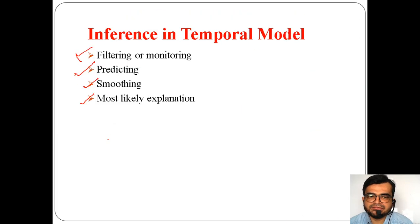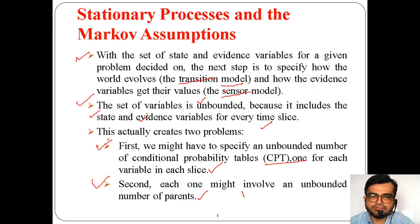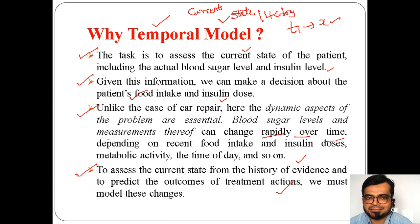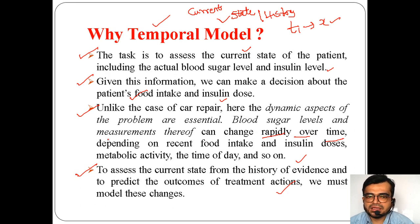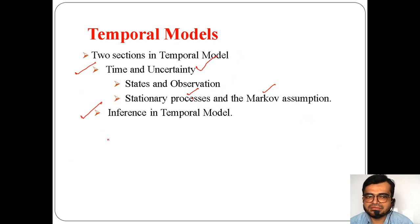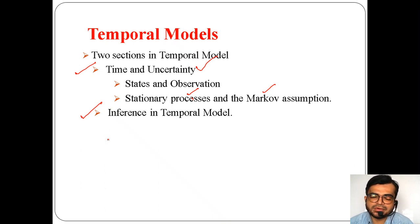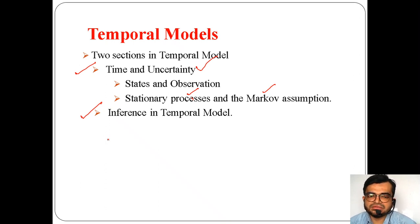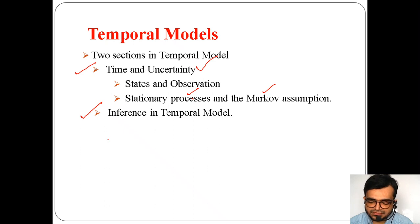In summary, in the temporal model we covered why we require it by taking examples of static and dynamic worlds. In the dynamic world we require a temporal model. We discussed how states and observations are represented, and the problems were solved by stationary process and Markov assumption. We also covered inference in the temporal model including filtering, predicting, smoothing, and most likely explanation. With this I have completed the session, thank you.